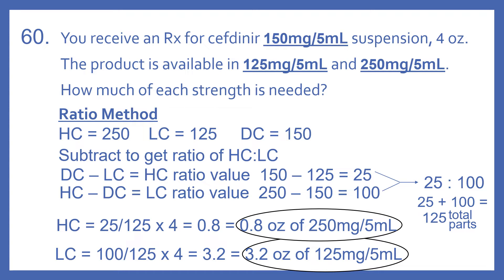Now we're going to subtract to get the ratio of HC to LC. If we take DC minus LC, that gives us the HC ratio value. So 150 minus 125 equals 25. Then if we take HC minus DC, that gives us the low concentration ratio value. So 250 minus 150 is 100. The ratio of HC to LC is 25 to 100.